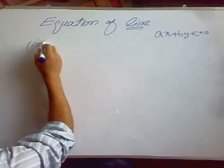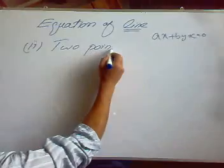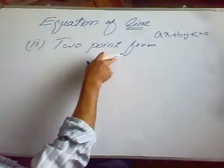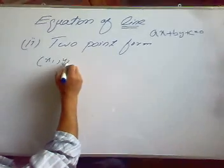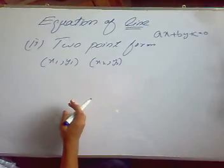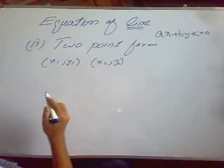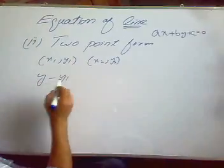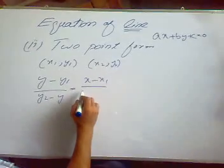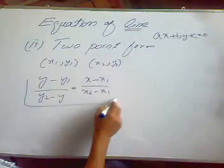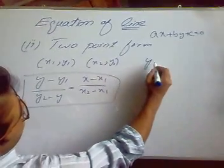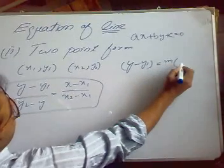Now let us discuss another form called the two-point form. From the name, here we will have two points that lie on the line — suppose these points are (x1, y1) and (x2, y2). There are two methods we usually use. The first is to use the general form: (y minus y1) over (y2 minus y1) equals (x minus x1) over (x2 minus x1). This is derived from the slope-point form. Our slope-point form is y minus y1 equals slope times x minus x1.